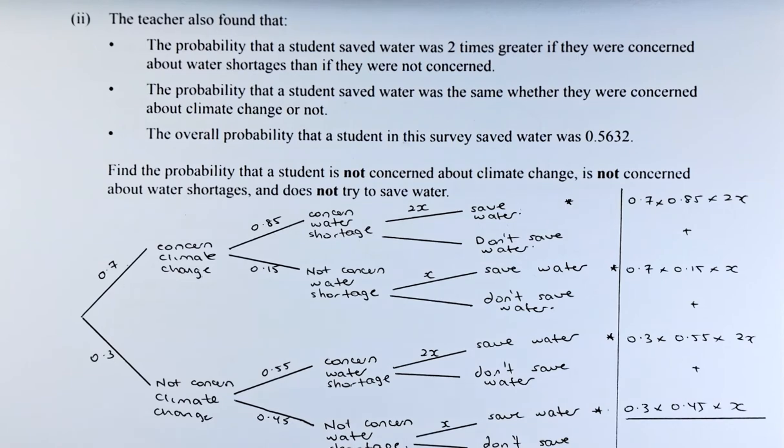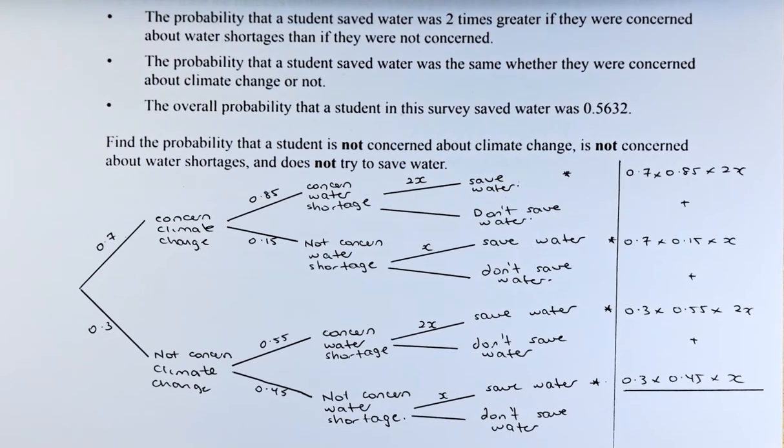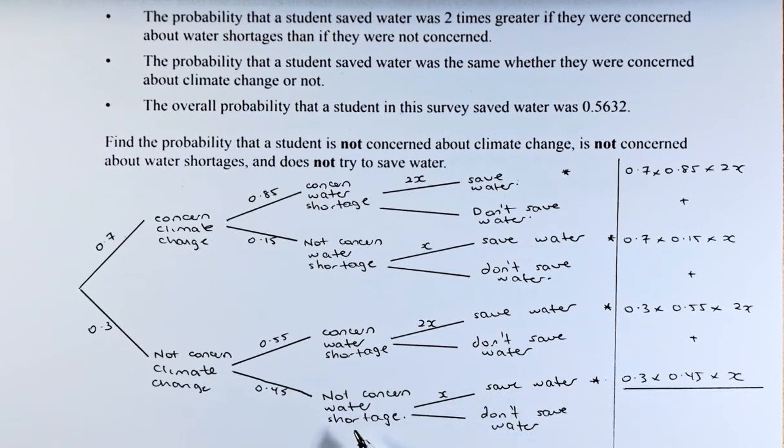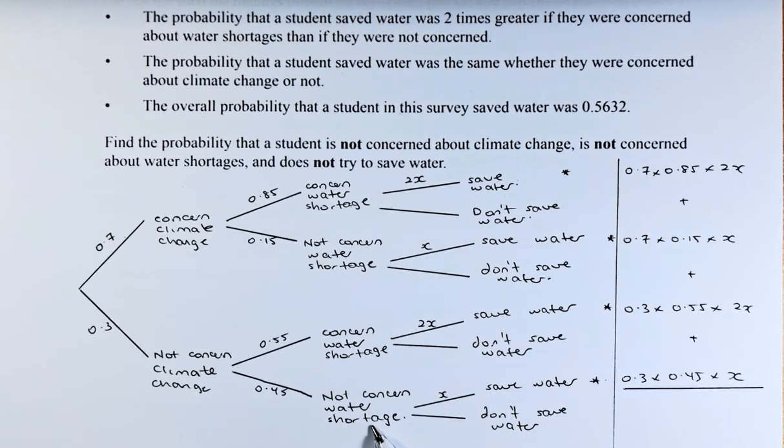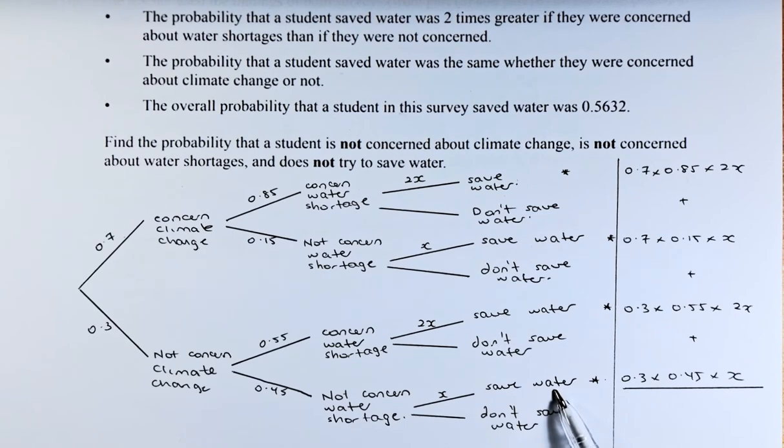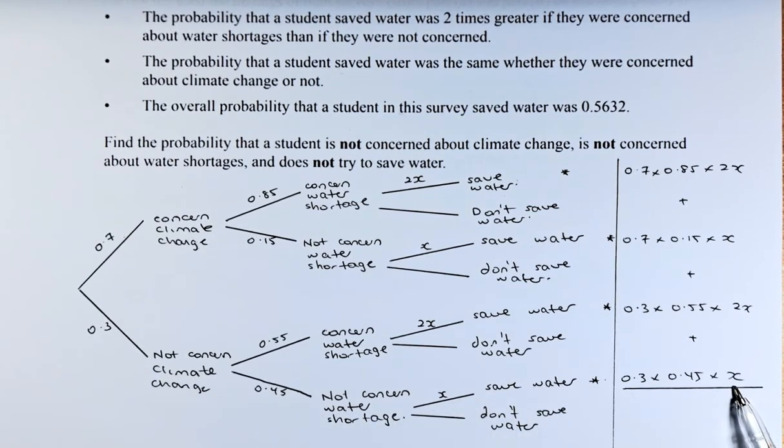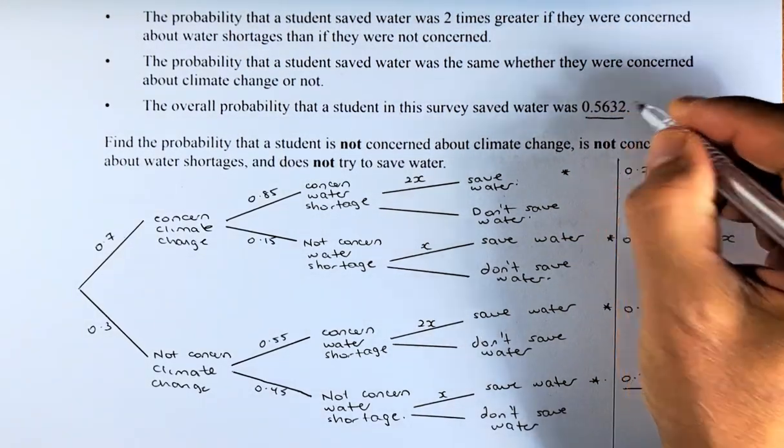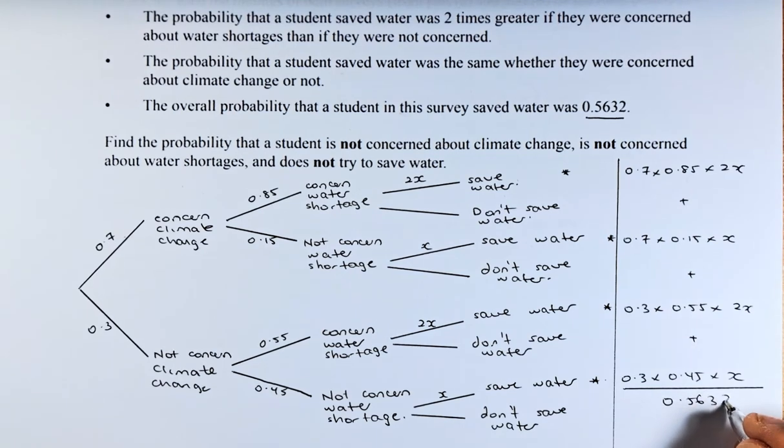And last but not least, if they are not concerned about climate change, they are not concerned about water shortage but they want to save water, the probability is 0.3 times 0.45 times x. And they said the total probability they want to save water is 0.5632. So if you add all these up, they must equal 0.5632.